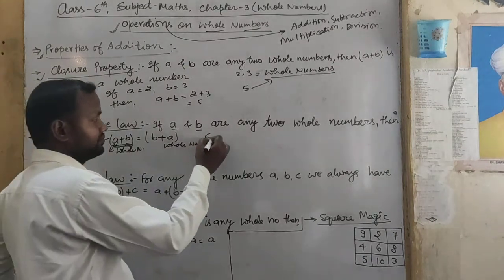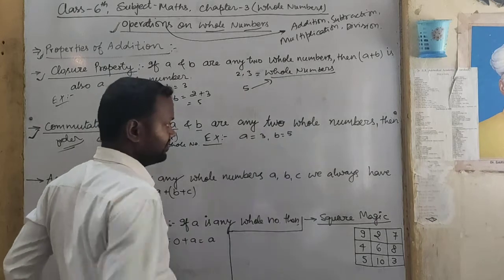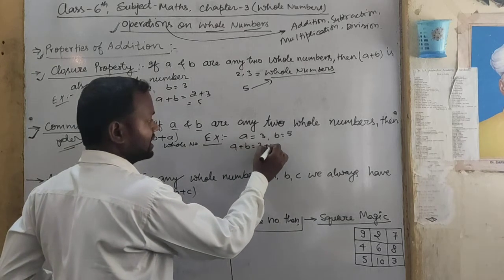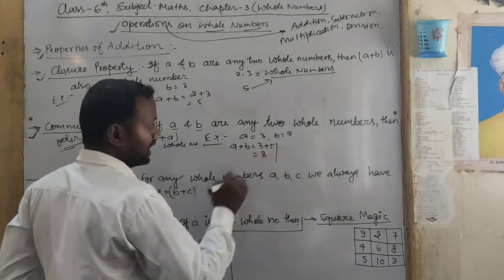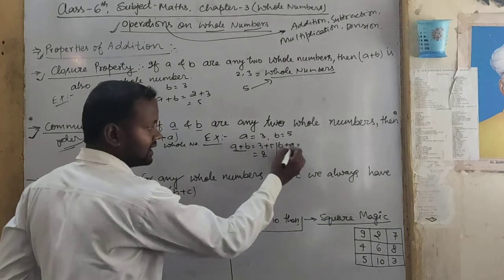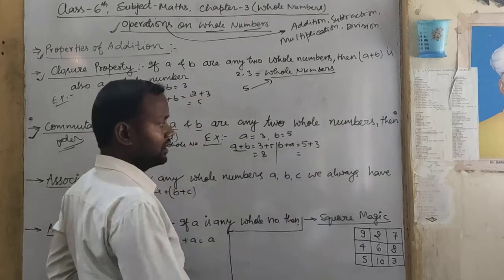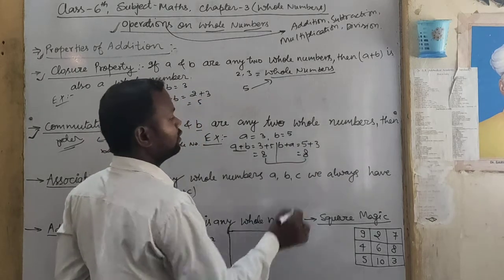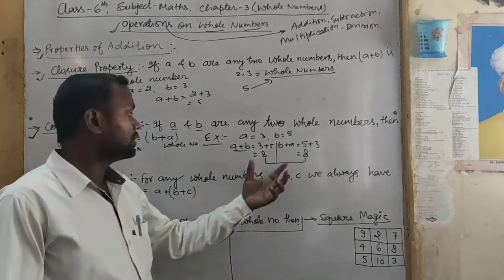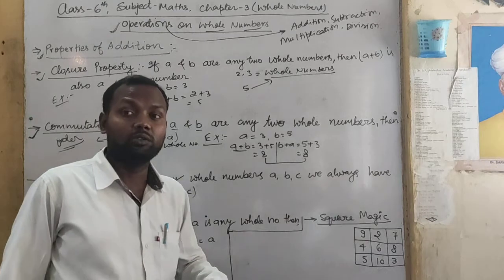Let's see an example. If A equals 3 and B equals 5, then A plus B equals 3 plus 5 equals 8. Now if we change the order, B plus A gives 5 plus 3, which is also 8. The value is the same. This confirms the Commutative Law.